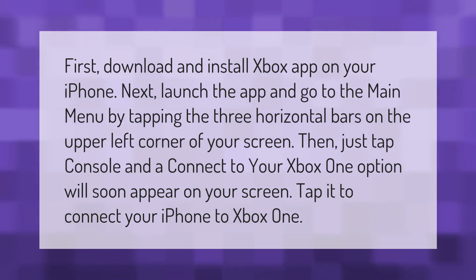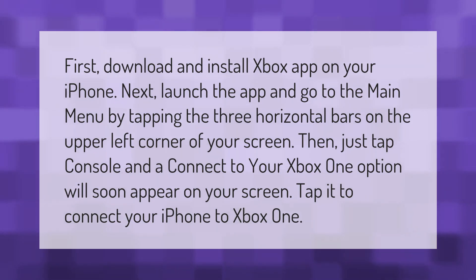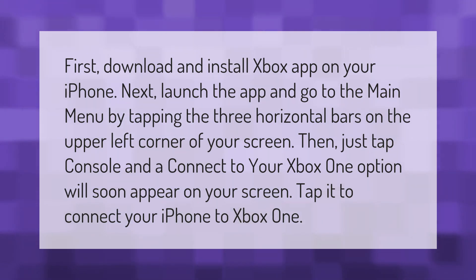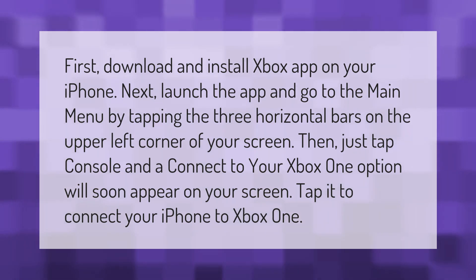Go to the main menu by tapping the three horizontal bars on the upper left corner of your screen. Then tap 'Console' and a 'Connect to your Xbox One' option will appear on your screen. Tap it to connect your iPhone to Xbox One.